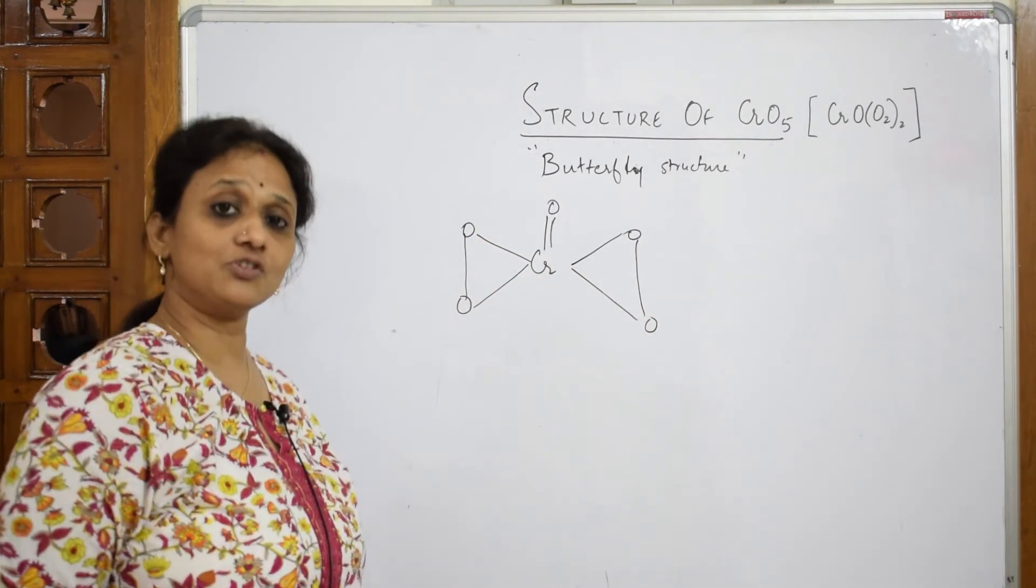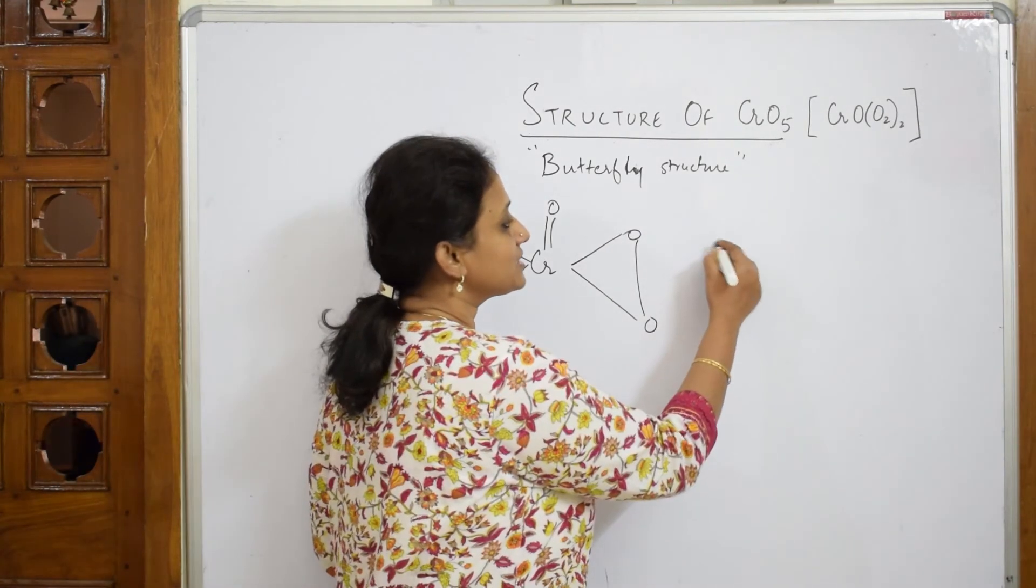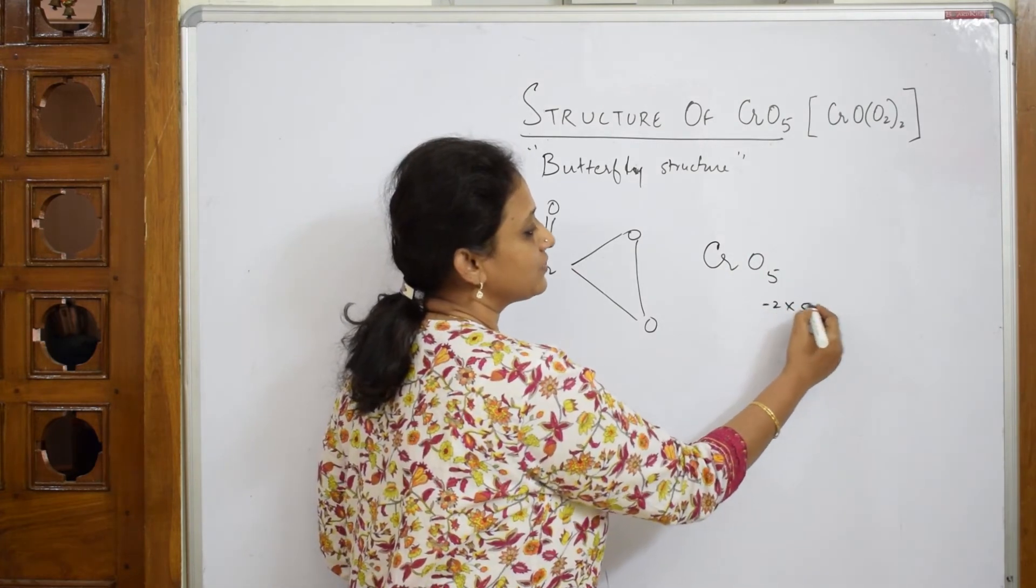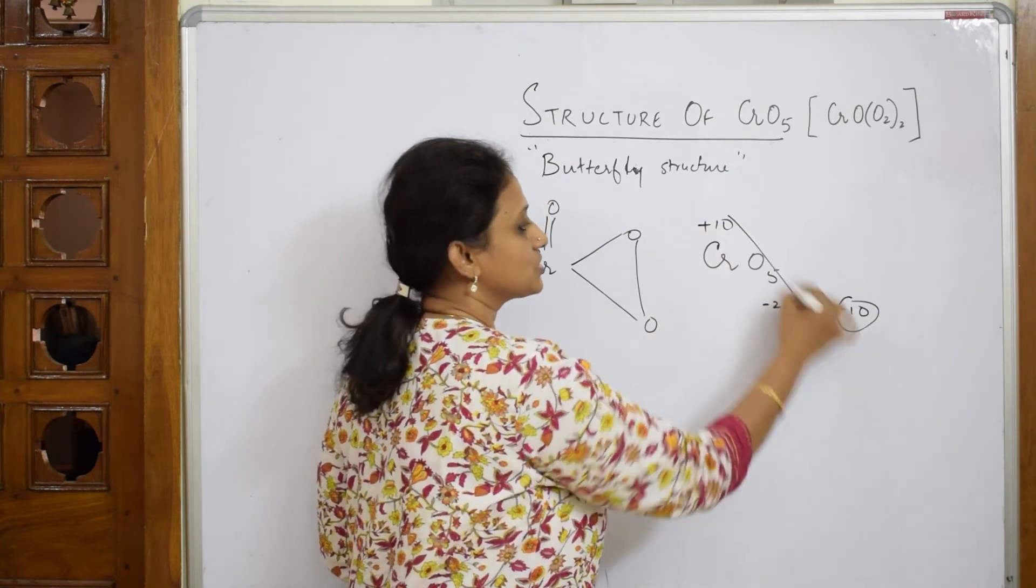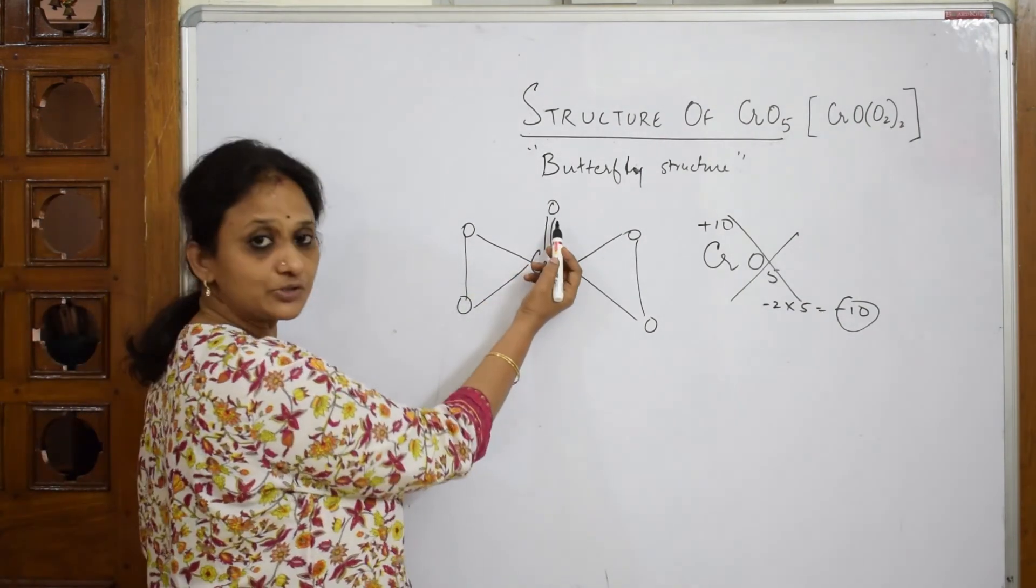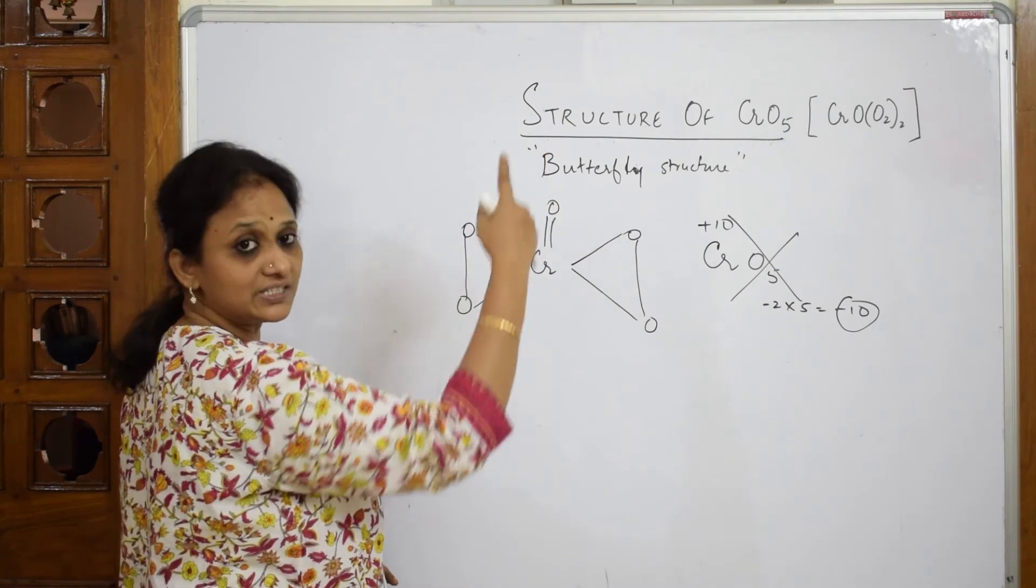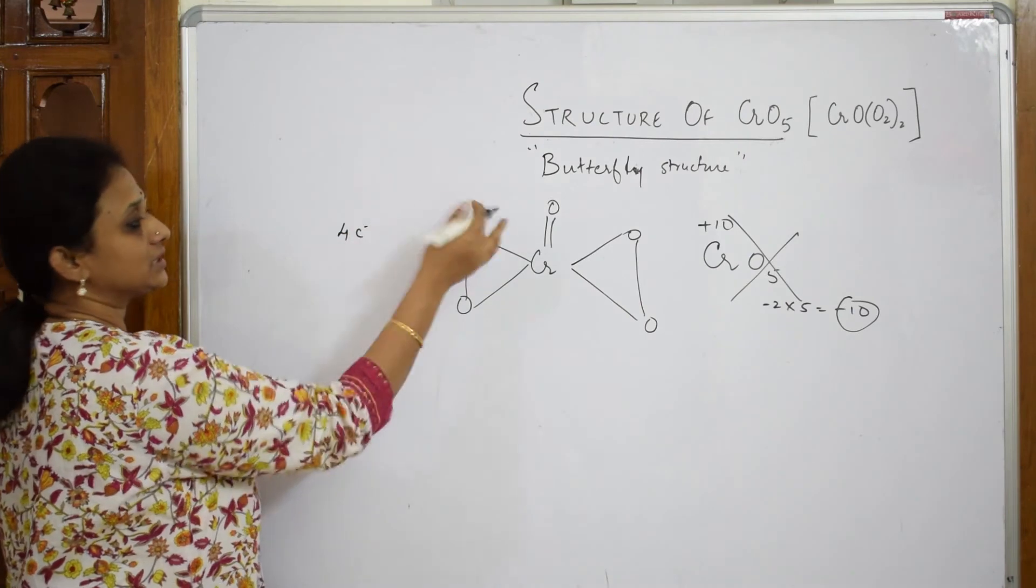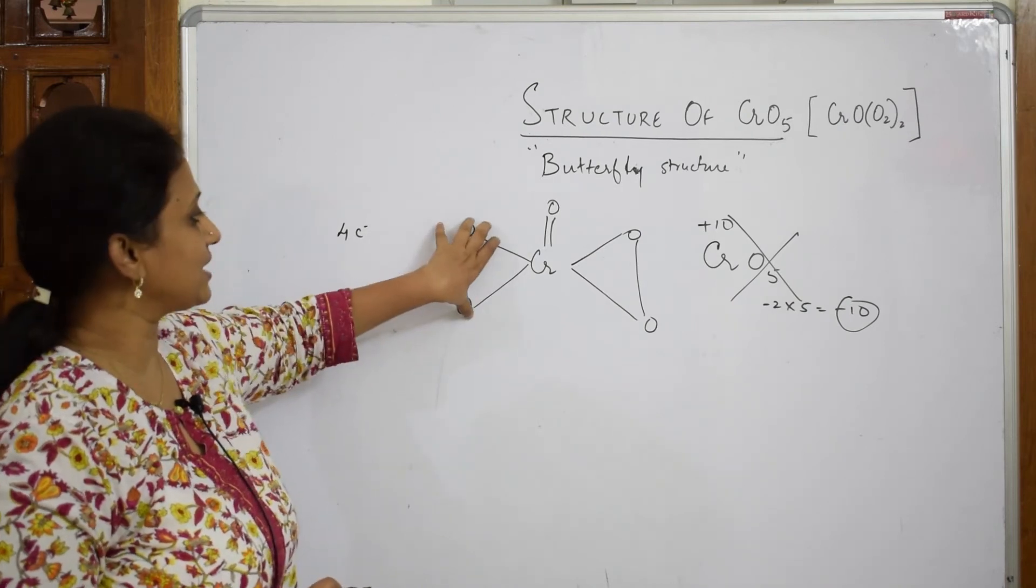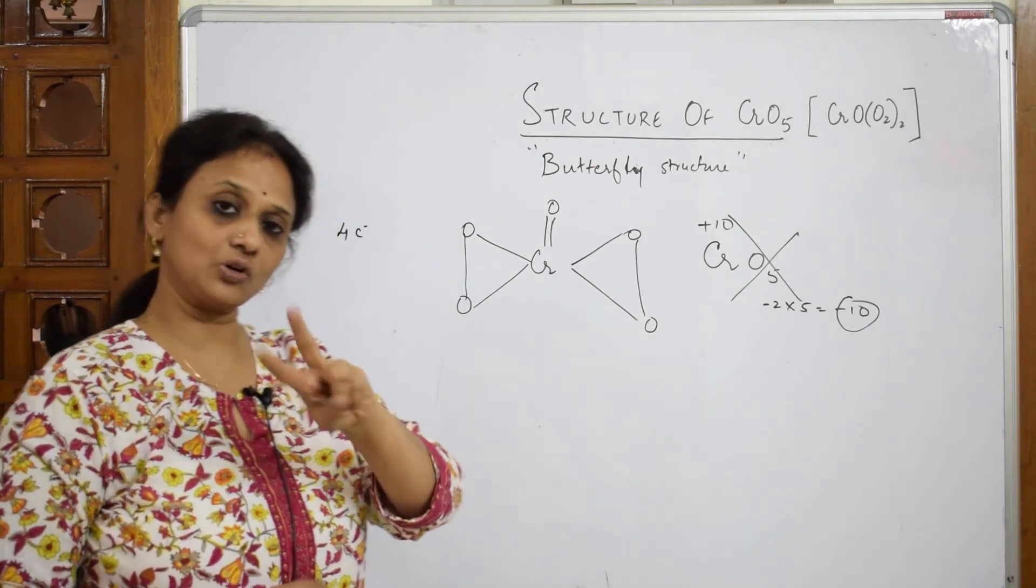When I have to calculate the oxidation state of chromium here, remember most of the students make this mistake: if I take CrO₅, oxygen is -2, 2 × 5 is -10, so this should be +10. No, this is wrong. Not +10 here. How do we calculate? Basically oxygen is electronegative, so what happens is this oxygen is going to drag the electron density and hold four electrons with it. This double bond, and then this particular entity is bonded.